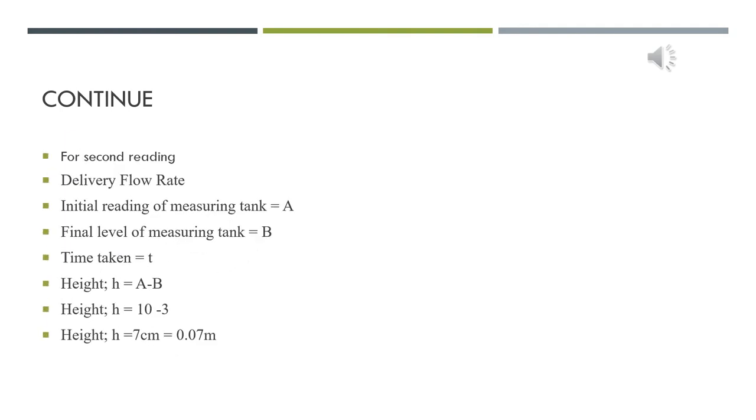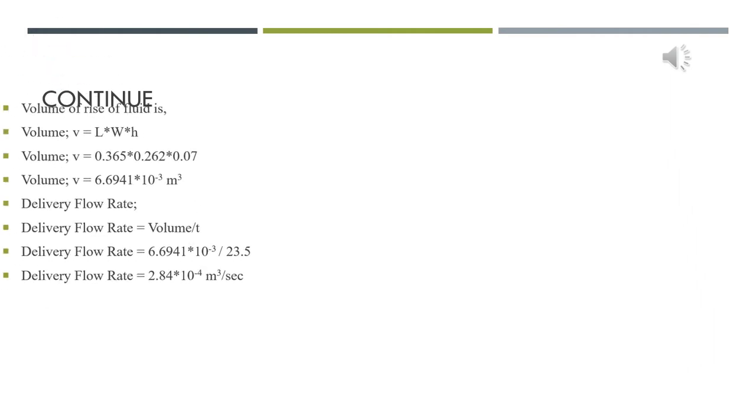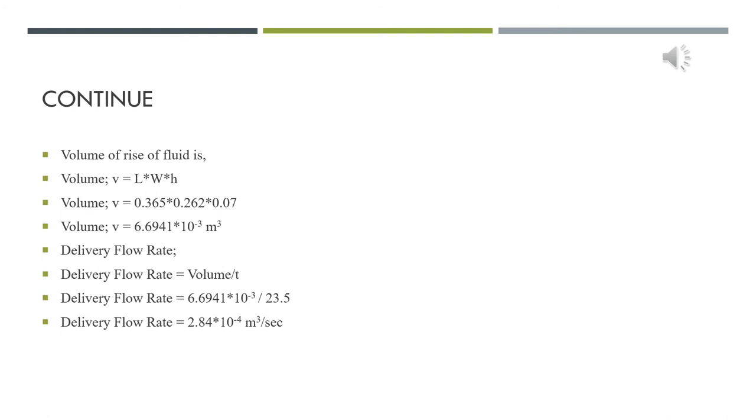Take the second reading for calculation. First, we have to find the delivery flow rate. The initial reading of measuring tank equals A and final level equals B. The time taken equals T. The height H equals A minus B. The height equals 10 minus 3 equals 7 cm or 0.07 meter. The volume of the rise of the rate equals length times width times height, which equals 6.6941×10⁻³ m³. The delivery flow rate equals volume divided by T equals 6.6941×10⁻³ divided by 23.5 equals 2.84×10⁻⁴ m³ per second.